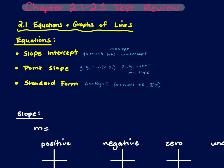A shortcut to getting the slope when it's in standard form is negative a over b. So if I had something like 3x plus 4y equals 12, then the slope of that line would be negative 3 over positive 4.